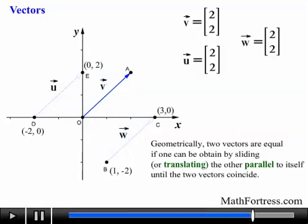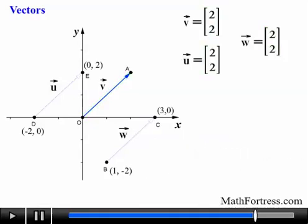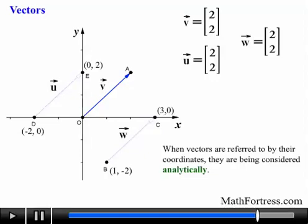Notice that vectors in component form represent a vector in standard form. In other words, a vector whose tail is located in the origin. In general, every vector can be drawn as a vector in standard position given its coordinates. When vectors are referred to by their coordinates, they are being considered analytically. Conversely, a vector in standard position can be redrawn by translation so that its tail is at any point in the plane.